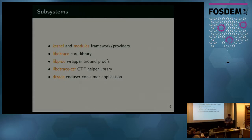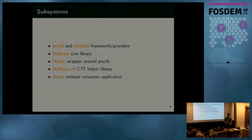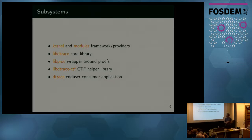How does it look from a binary or deployment perspective? You need a kernel with D-trace support, because we need some architecture-specific stuff directly in the kernel. You need a set of modules — one module called dtrace is the framework itself, and each provider is usually a separate kernel module. Then we have libdtrace, the core of the user space, responsible for compiling your scripts, talking to the kernel part, running the stuff, extracting the buffers, parsing the records, and handling them. There is also libproc, a procfs wrapper as a porting layer.